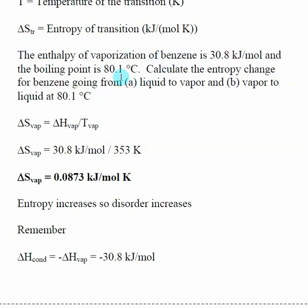The other piece we need is the temperature for this transition. The boiling point of benzene is 80.1°C, and we need to convert that to Kelvin. So the enthalpy of vaporization goes in, I convert 80.1°C to Kelvin, divide one by the other, and I get a ΔS of vaporization of 0.0873 kJ/mol·K.